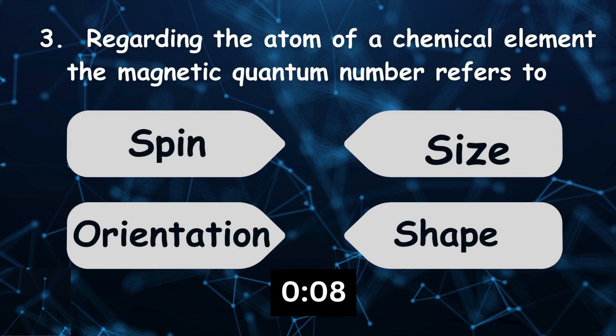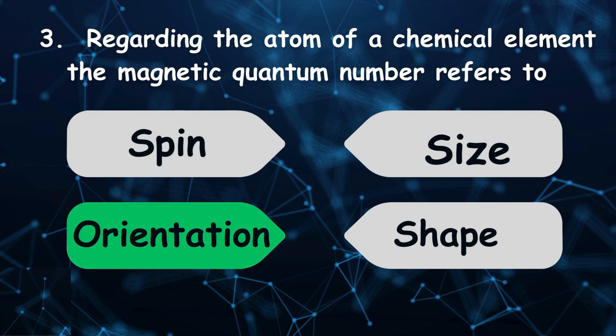Regarding the atom of a chemical element, the magnetic quantum number refers to orientation.